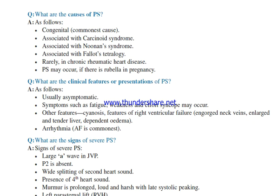What are the causes of pulmonary stenosis? The causes are: congenital, which is the commonest cause; associated with carcinoid syndrome; associated with Noonan syndrome; associated with Fallot's tetralogy; rarely in chronic rheumatic heart disease; and pulmonary stenosis may occur if there is rubella in pregnancy.